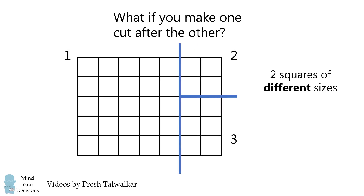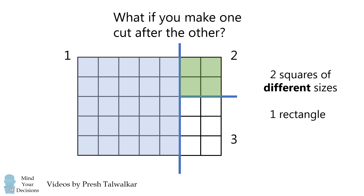We've created two squares of different sizes, and we have a rectangle left over. It's a pretty tricky problem to see on a test with time pressure, but I think it's a pretty neat problem because you have to think a little bit creatively.